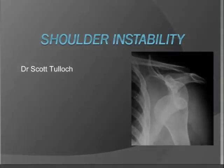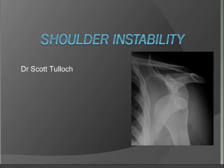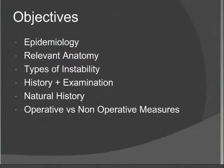My talk is about shoulder instability — it's quite a large topic, so I'll try to cover the more pertinent points we see most commonly. The objectives are to discuss epidemiology, the relevant anatomy, pathoanatomy, the types of instability we commonly see, the important points of history and examination, the natural history with long-term outcomes, and the different operative and non-operative measures we can use.